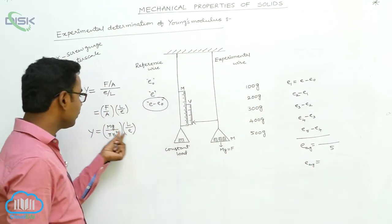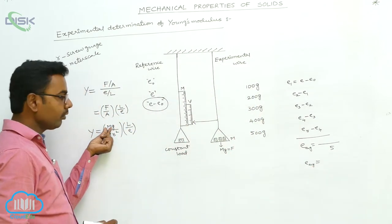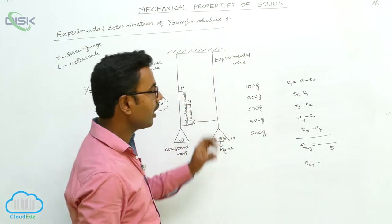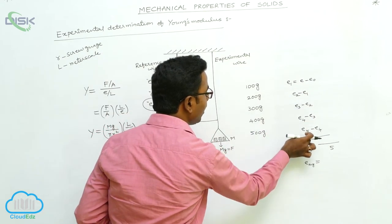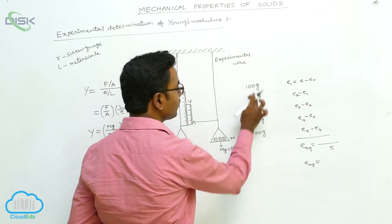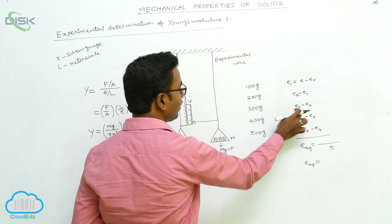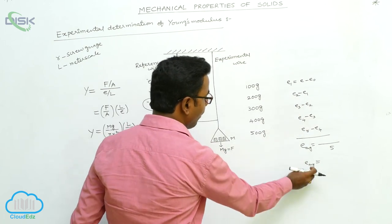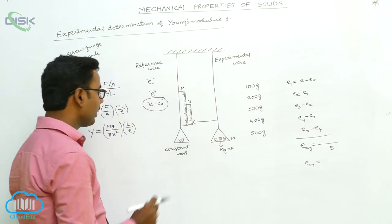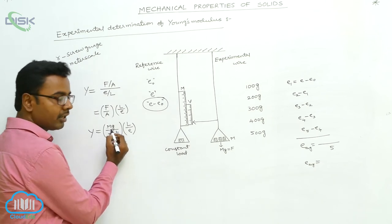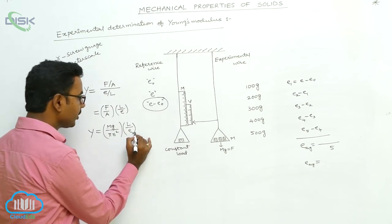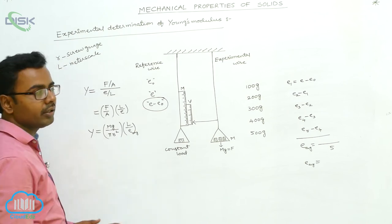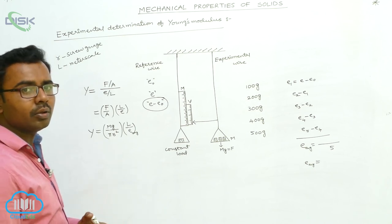Instead of using the elongation for only the first 100 grams mass, we find the average elongation for 100 grams mass. These are the individual elongations for the first, second, third, fourth, and fifth 100 grams. Now we find the average elongation for only 100 grams. Here M is taken as 100 grams — it is the average elongation E-average for 100 grams mass. By substituting all these values, we find the Young's modulus of the material of the wire.